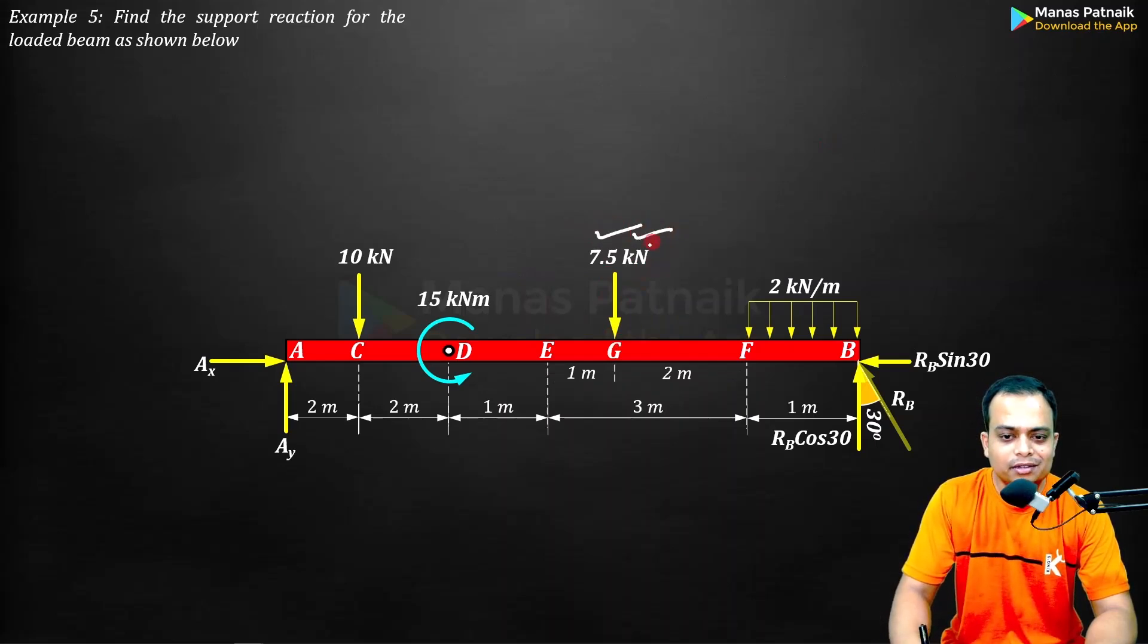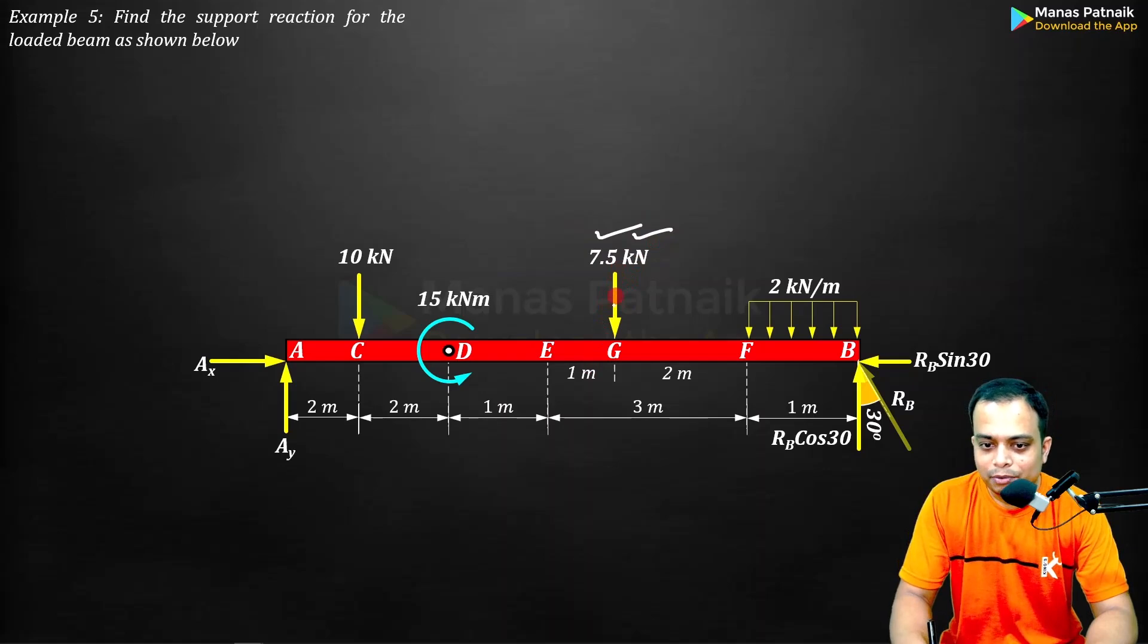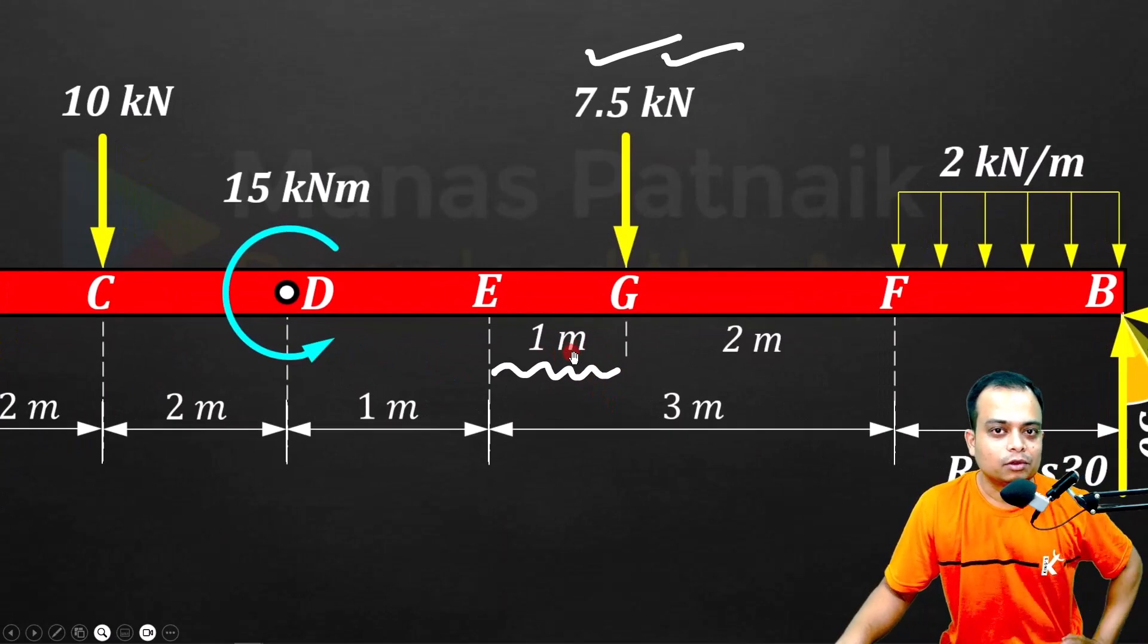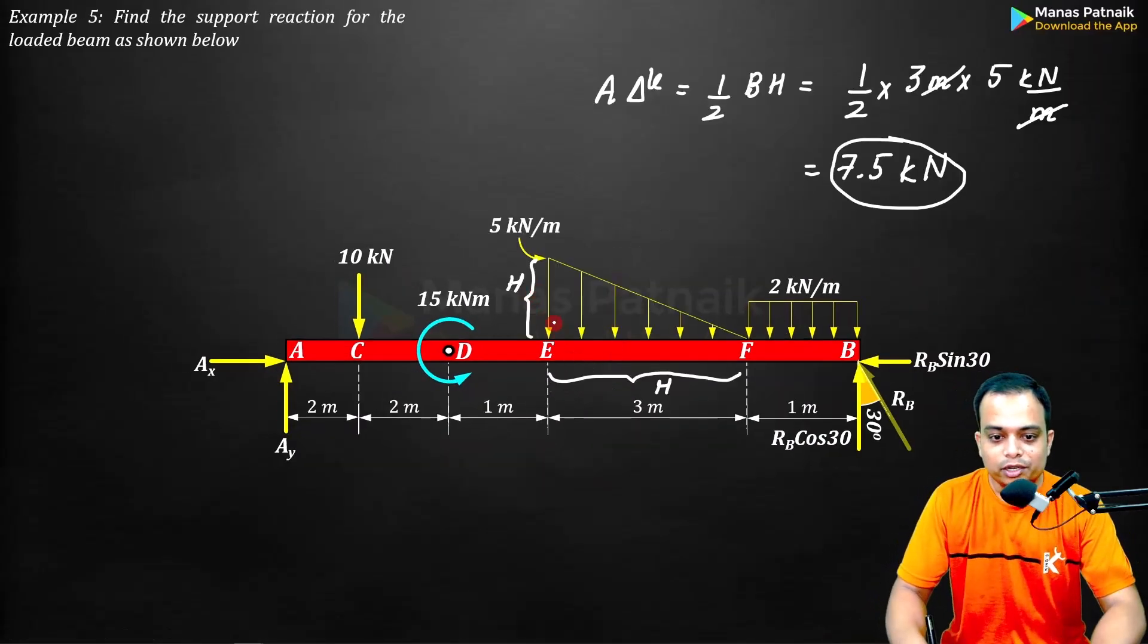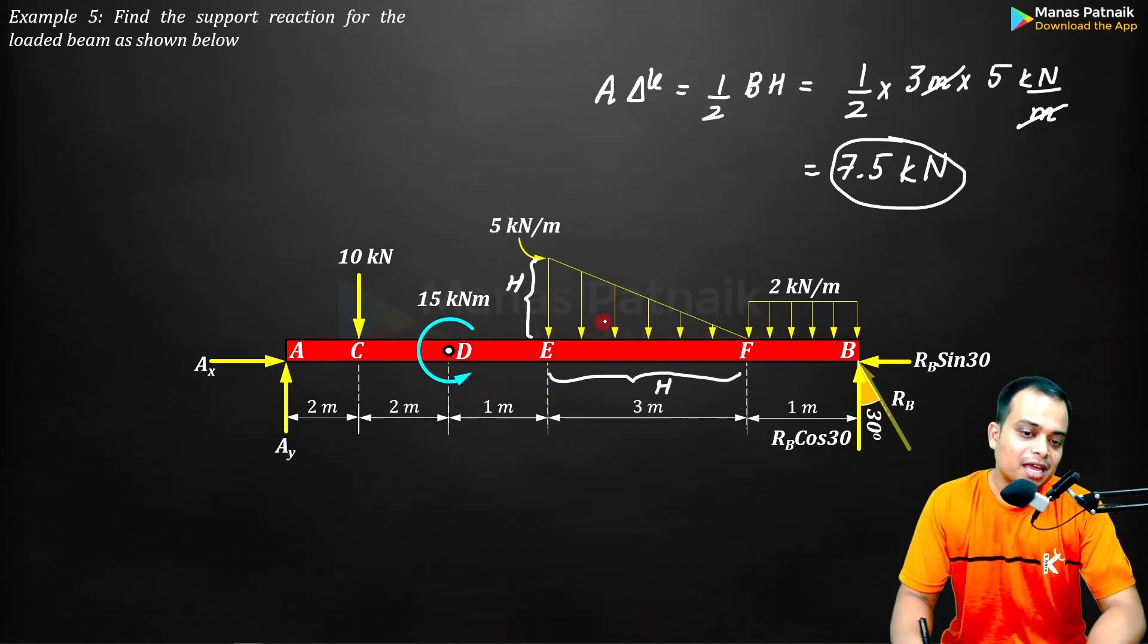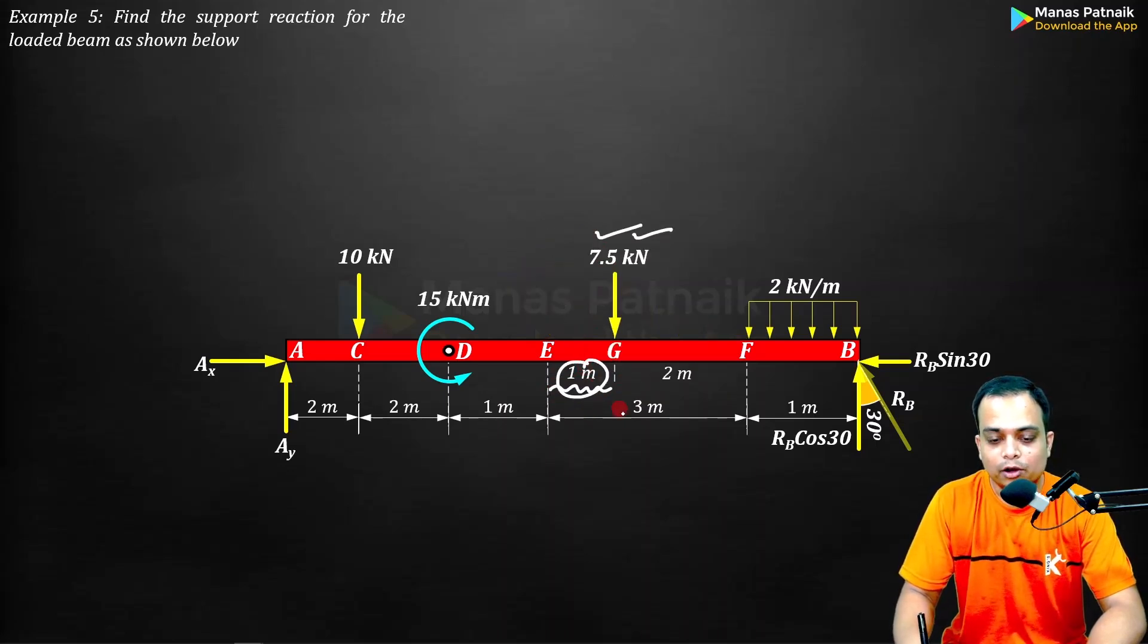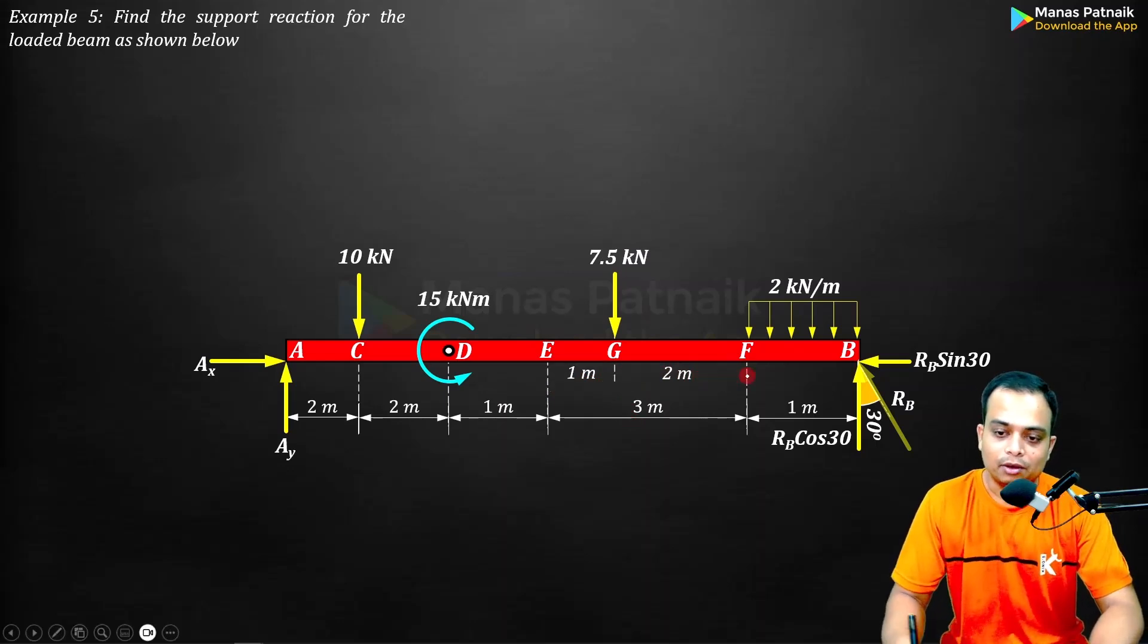Why have you kept this 7.5 kilonewton at a distance of one meter? Please remember, whenever you come across any triangularly varying load, especially when there is a right angle, from the right angle the distance that the new point load is going to have is L by three. L is three, so three by three is one. That's why you see this one over here, and obviously three minus one is two.